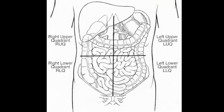You have your right upper quadrant, your left upper quadrant, your right lower quadrant, and your left lower quadrant. In your right upper quadrant, you primarily have your liver and gallbladder. In the left upper quadrant, you have your stomach, spleen, large intestine, and small intestine. In your left lower quadrant, you have small intestine and large intestine. In your right lower quadrant, you have your large intestine, small intestine, and your appendix.